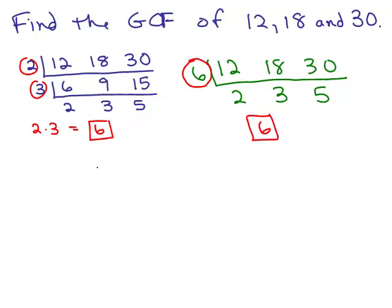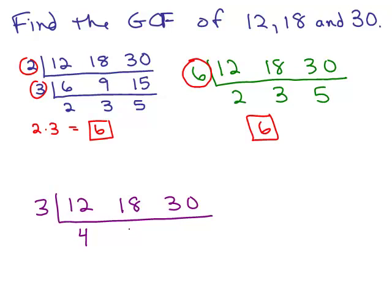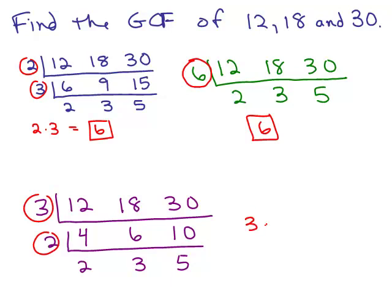And why not one more way? Person number three, when they looked at this, thought: I can think of a number that goes into all three — it's 3. Any number that you can think of that goes into all those numbers, you can put on the outside. 3 goes into 12 four times, 3 goes into 18 six times, and 3 goes into 30 ten times. Now we look at 4, 6, and 10 — what goes into all three? That will be 2. 2 goes into 4 twice, 2 goes into 6 three times, 2 goes into 10 five times. Multiply those numbers together: 3 times 2 equals 6. So there are three ways different students might figure out that the greatest common factor of 12, 18, and 30 is 6.